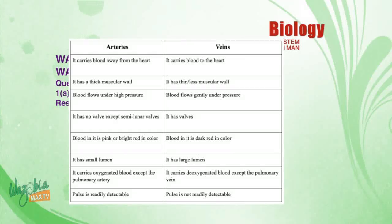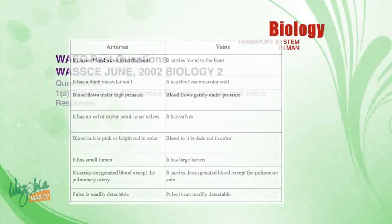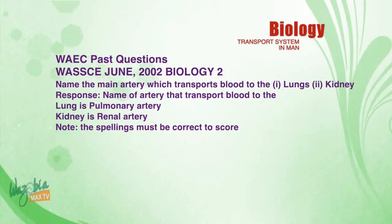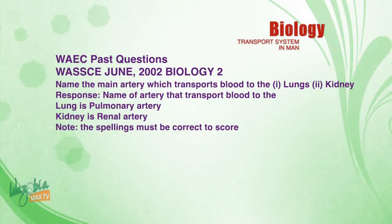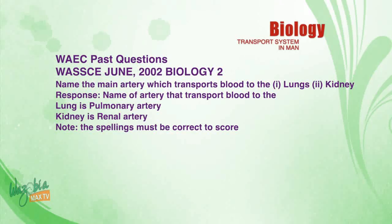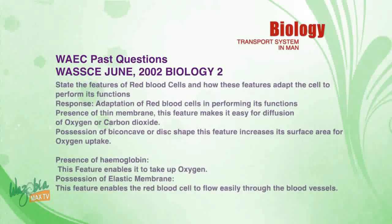Another question: Name the main artery which transports blood to (one) the lungs, (two) the kidney. Response: The artery that transports blood to the lungs is the pulmonary artery. The artery that transports blood to the kidney is the renal artery. Note that spelling must be correct to score.